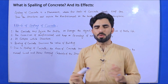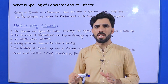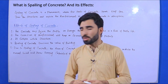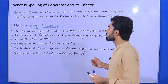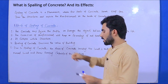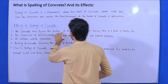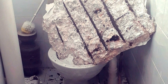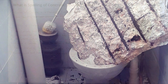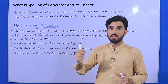You can see this in many building constructions, especially in old constructions. Now, what are the effects of spalling of concrete? The first one: the concrete may injure the people or damage the objects below. This is a risk to people's lives.